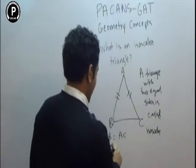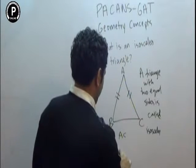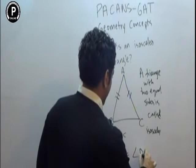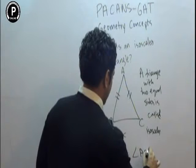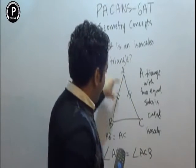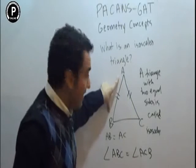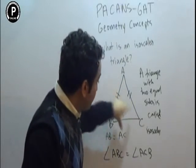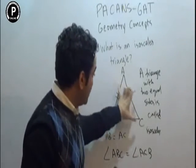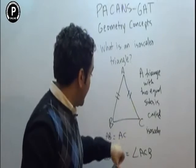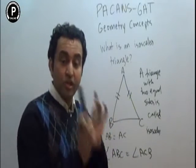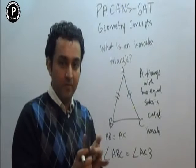That means angle ABC is going to be equal to angle ACB. This side is AB and the opposite angle is ABC. These two angles are going to be equal.